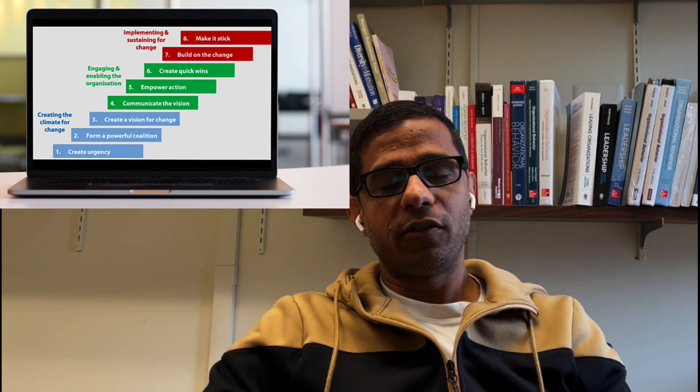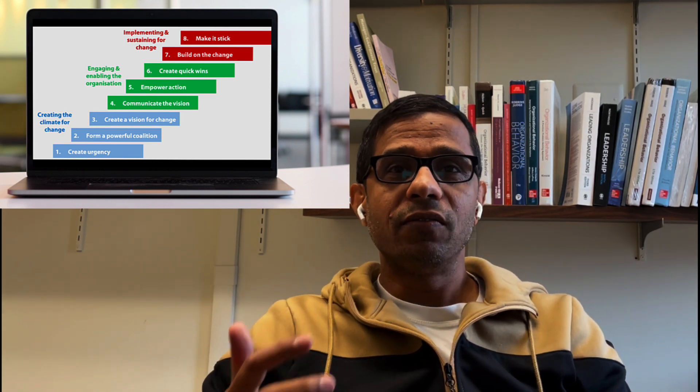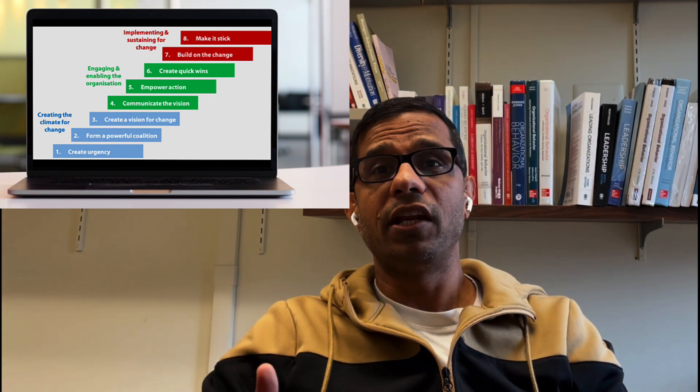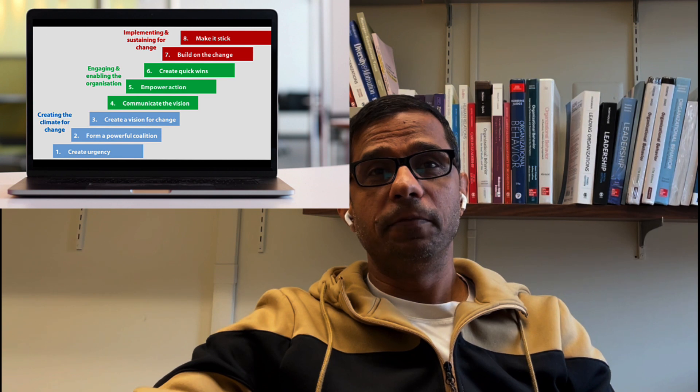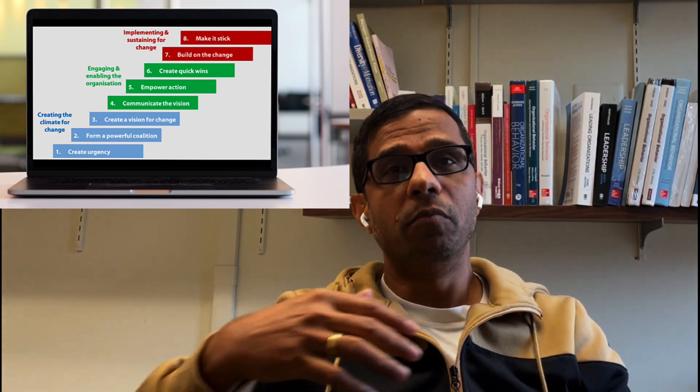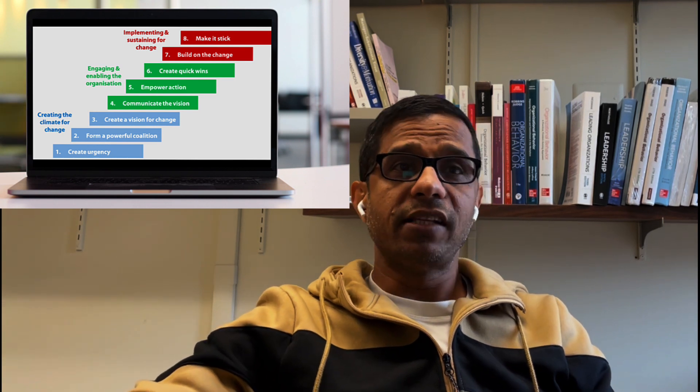One last point: Kotter in his estimate says you need to bring in that sense of urgency in at least 75% of your managers. 75% of your managers need to be convinced that they have to change, that the organization does need this change, otherwise it's not going to work. It is not just having a sense of urgency yourself or amongst your immediate reports — it needs to reach about 75% of the managers in the organization. When this is not happening, that's when organizations fail in their change attempt. As I said, 50% of organizations do not do this first step properly and due to that they fail.